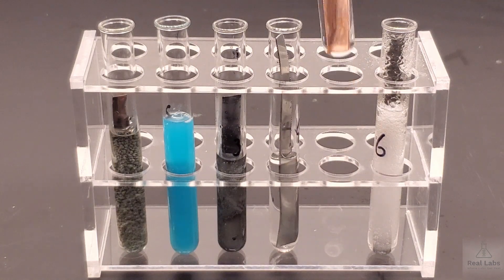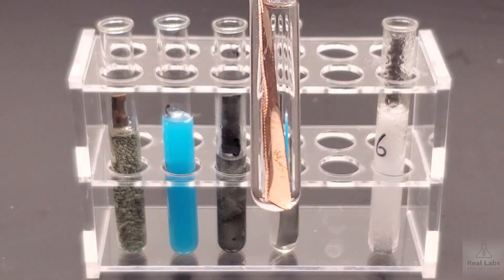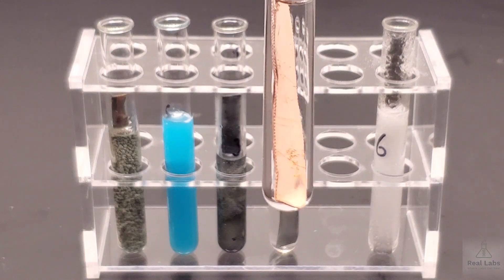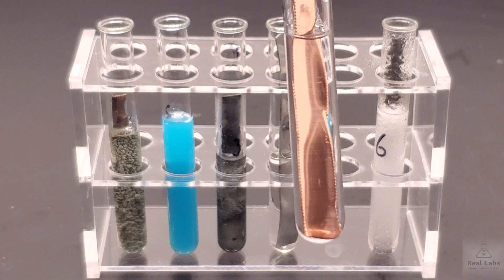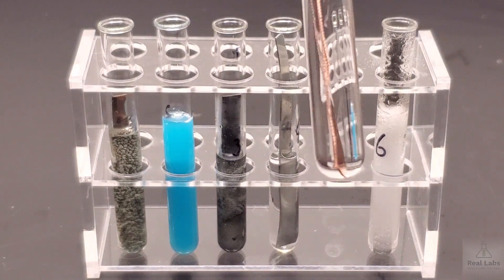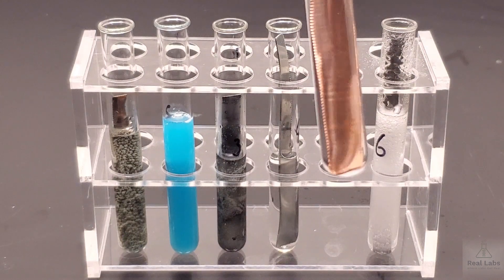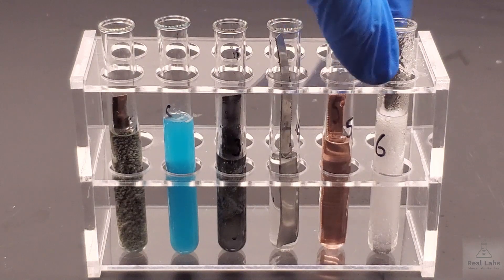In system number five, where we had the copper strip and the sulfuric acid. So the 3M sulfuric acid and the copper strip. Again, describe the metal. Describe if you see any solids. The color and the clarity of the supernatant liquid.